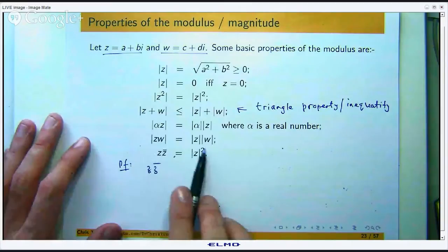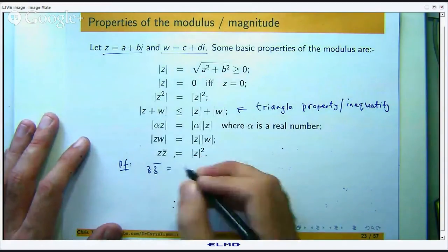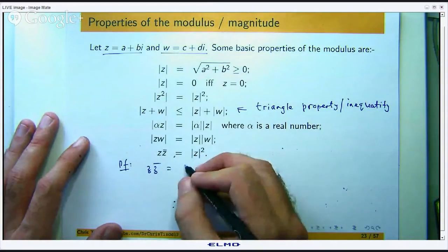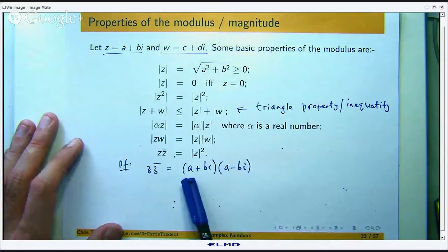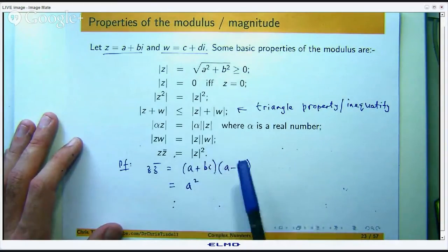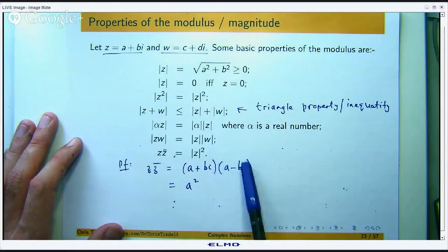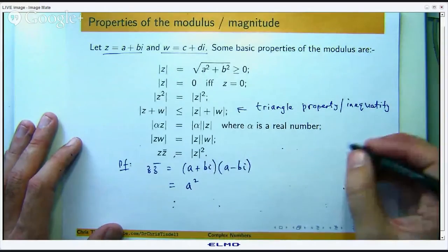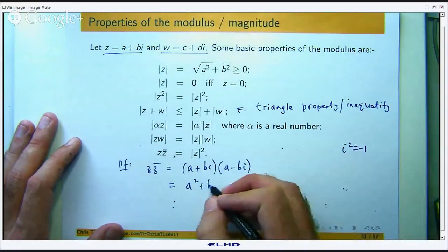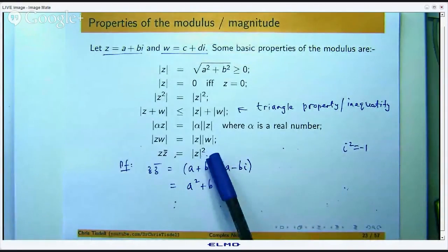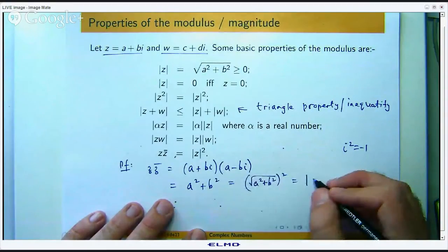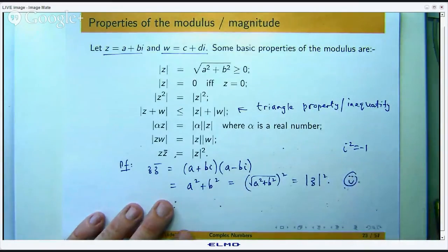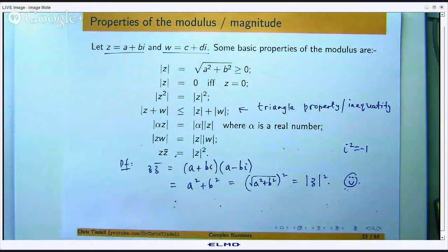If you want to prove that last property, you look at the left-hand side and show it equals the right-hand side. Take a plus bi times a minus bi: expanding, you get a squared, the terms negative abi and positive abi cancel, and then bi times negative bi gives b squared because i squared equals negative 1. So the result is a squared plus b squared, which is exactly the square of the modulus.